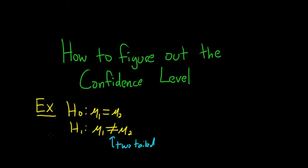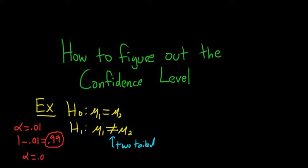So if you have a two-tailed test, all you do is compute 1 minus alpha to get your confidence level. For example, if your alpha is .01, then your confidence level would be 1 minus .01, which is .99. If your alpha was .05, then it would be 1 minus .05, giving you .95. Whenever it's two-tailed, the confidence level is always 1 minus alpha.